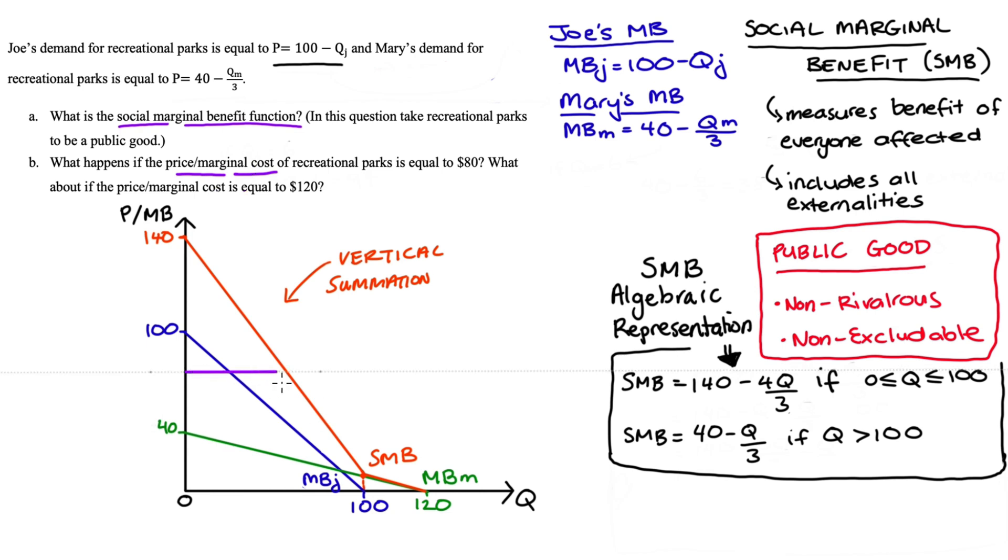Actually that will come through as a line like this. Now at this price of $80 you can see that it's above Mary's marginal benefit, Mary's demand, that's the green line, but below Joe's individual demand curve, that's the blue line.